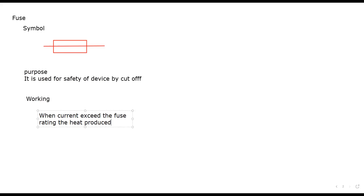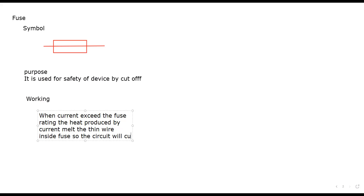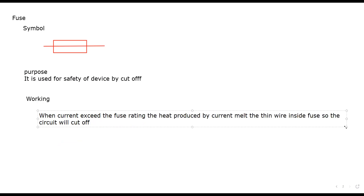The working: when the current exceeds the fuse rating, the heat produced by the current melts the wire inside the fuse, so the circuit is cut off. As we know, current has a heating effect, and every fuse has its own rating.